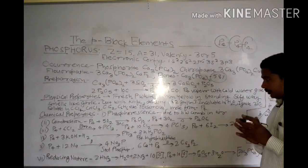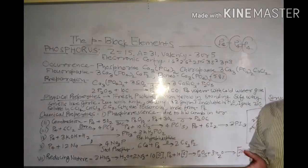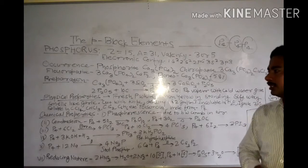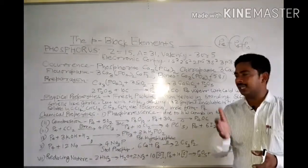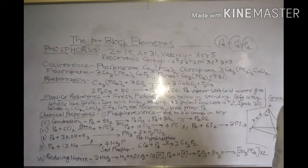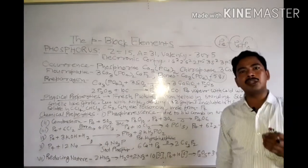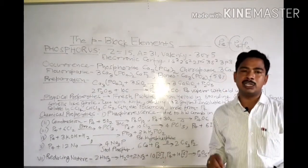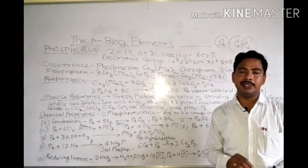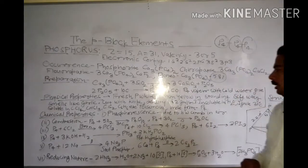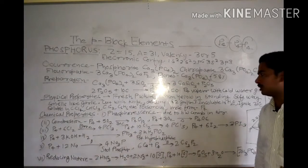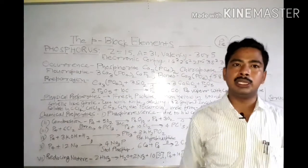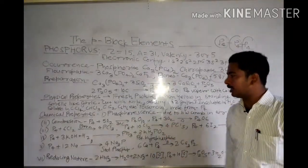White phosphorus when freshly prepared is white but on standing it turns yellow. Its smell is like garlic. It is soft and waxy and can be cut with a knife. Density is 1.82 g/cm³. It dissolves in benzene, carbon tetrachloride, carbon disulfide, and chloroform. It exists in the molecular form P4, where one molecule has four phosphorus atoms.